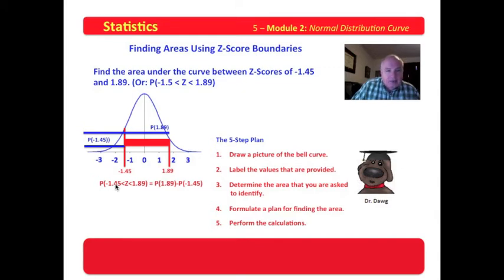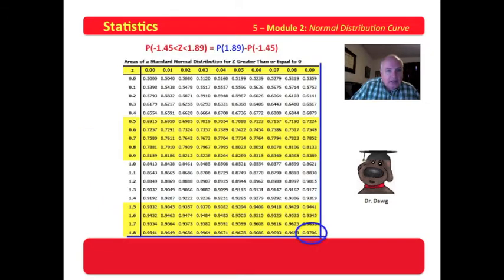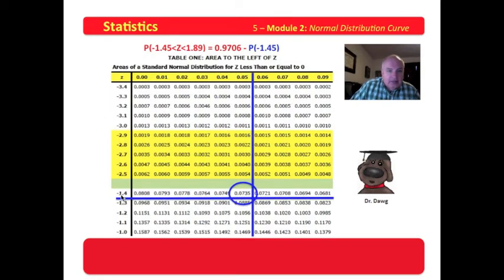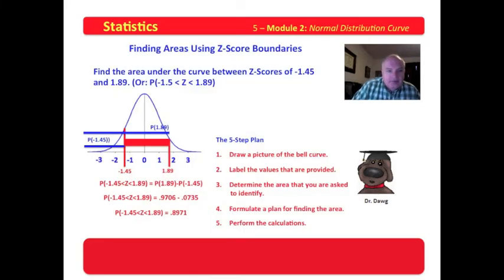So the probability that Z lies between negative 1.45 and 1.89 is the probability of 1.89 — this entire probability — minus the probability of negative 1.45. We have a plan, and then we just read the tables. We find that the probability of 1.89 is 0.9706. We find the probability of negative 1.45 is 0.0735. So we plug those in: 0.9706 minus 0.0735, and we find that the area is equal to 0.8971, or 89.71% of the area lies within those boundaries.